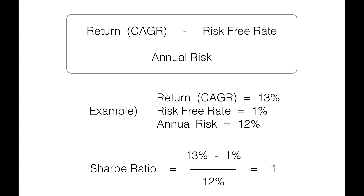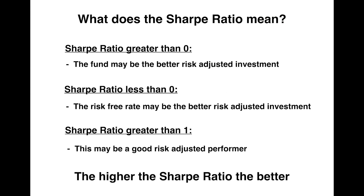In this simple example: a 13% annual rate of return, minus the 1% risk-free rate, divided by a 12% annual risk, gives us a Sharpe Ratio of 1. Any Sharpe Ratio above 0 means you may be better off with the fund rather than the risk-free rate. A Sharpe Ratio below 0 means you may be better off with the risk-free rate — in this case, U.S. Treasuries. For context, a Sharpe Ratio of around 1 is pretty good — a fairly consistent performer. A Sharpe Ratio near 2 would be exceptional, especially stretched out over several years. Essentially, from a risk-adjusted perspective, the higher the Sharpe Ratio number, the better.